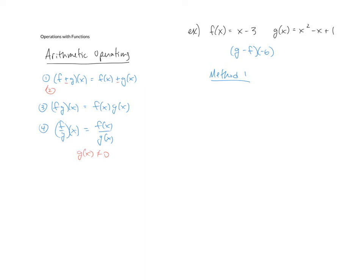The first method that we'll take is where we take function g and subtract from it function f. So function g would be x squared minus x plus one and we're going to subtract x minus three. When we clean this up we'll distribute our negative and we end up with x squared minus 2x plus 4.